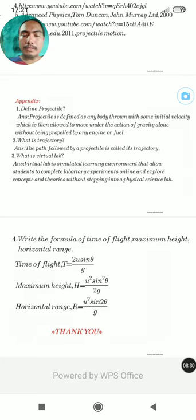Number two: What is trajectory? The path followed by a projectile is called its trajectory. Number three: What is virtual lab? Virtual lab is a simulated learning environment that allows students to complete laboratory experiments online and explore concepts and theories without stepping into a physical science lab.